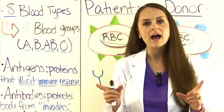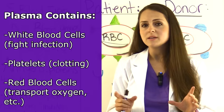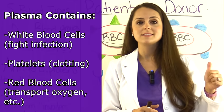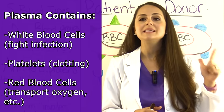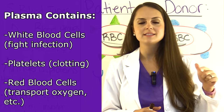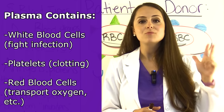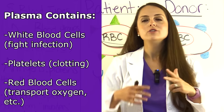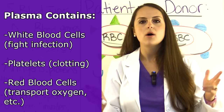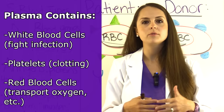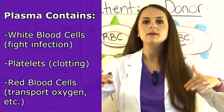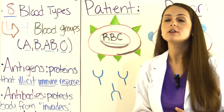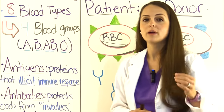In our blood we have plasma, and suspended in that plasma we have white blood cells that fight infection, platelets which help us clot, and red blood cells which help us transport oxygen throughout our body and remove carbon dioxide so we can exhale it through our lungs. Here we're concentrating on red blood cells.